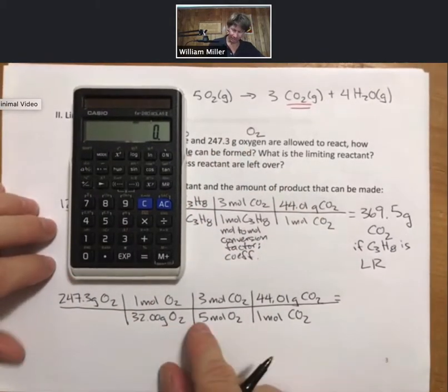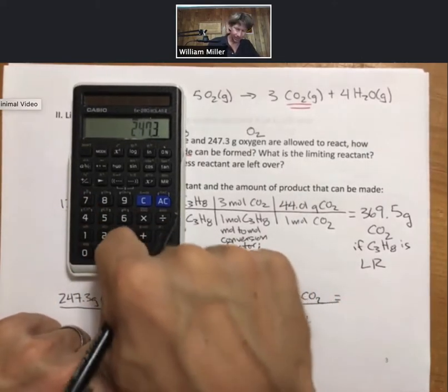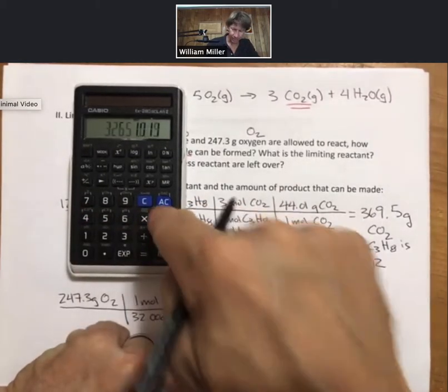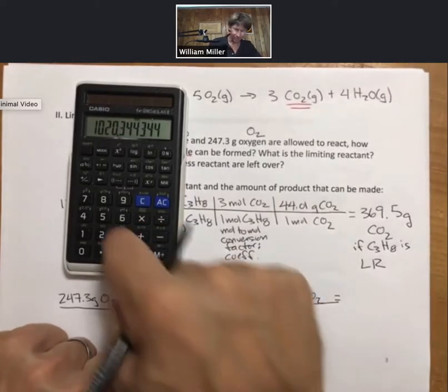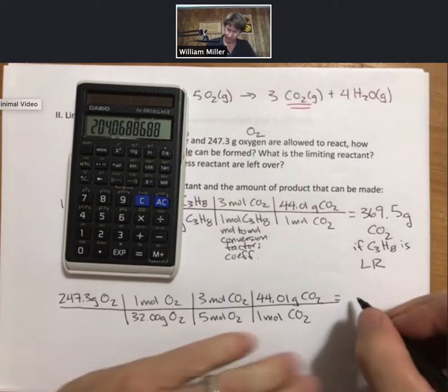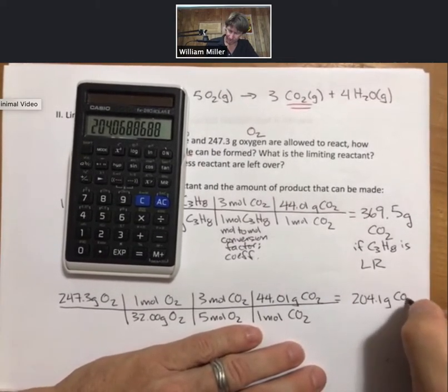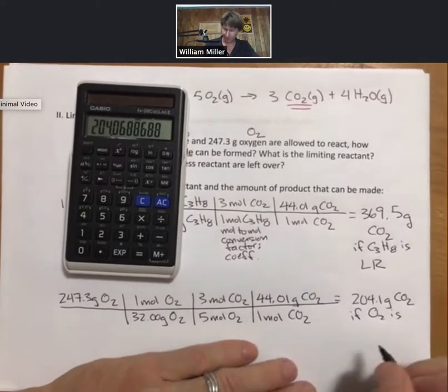Multiply by the numbers across the top: 247.3 times 3 times 44.01 divided by 32 divided by 5, and I get 204.1 grams of CO2 if oxygen is the limiting reactant.